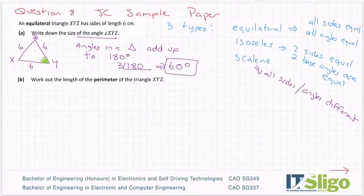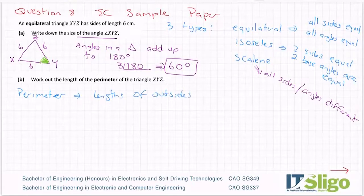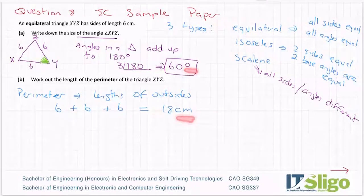Okay, work out the length of the perimeter. Perimeter is the lengths of the outside. If you were to walk all the way around that, it's 6 plus 6 plus 6 equals 18 centimeters. Make sure you have your units in every case — at the start of any exam paper it tells you that marks may be lost if units are not included.